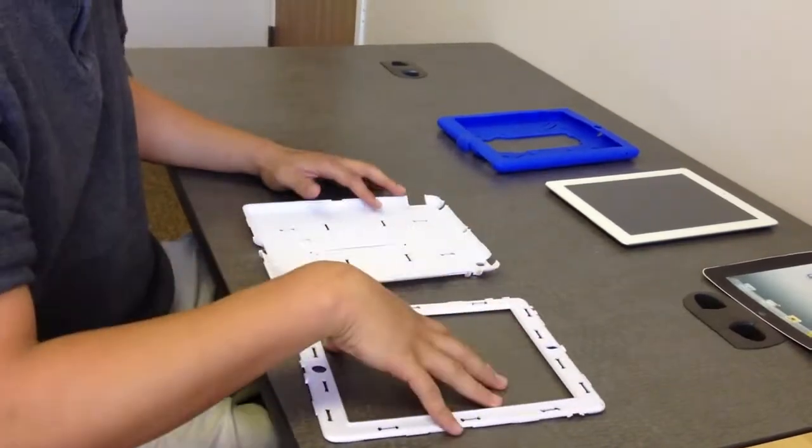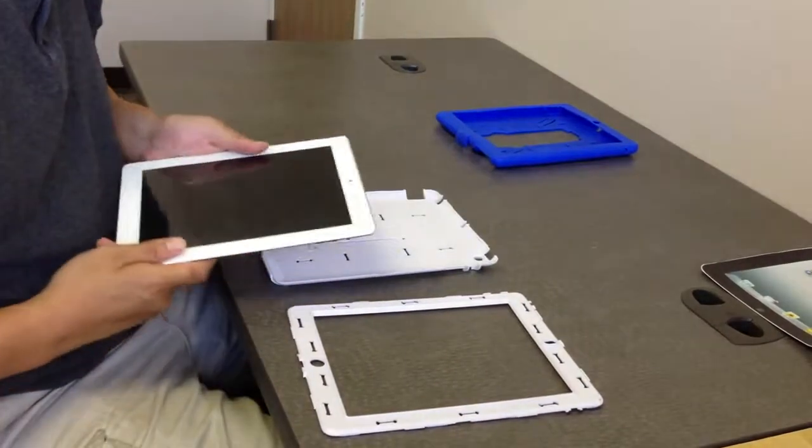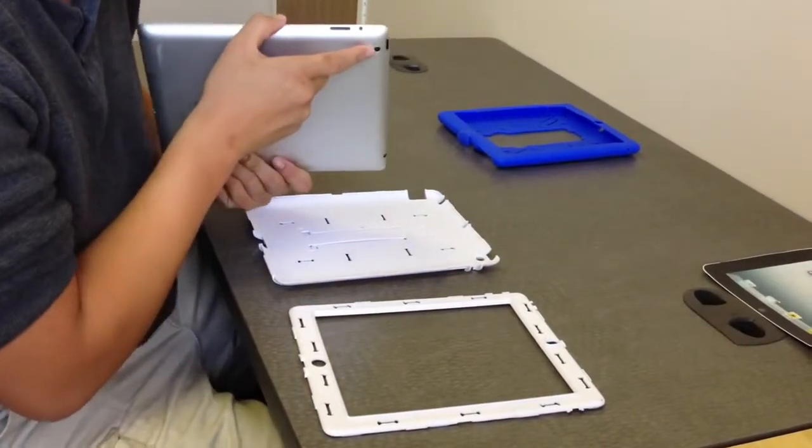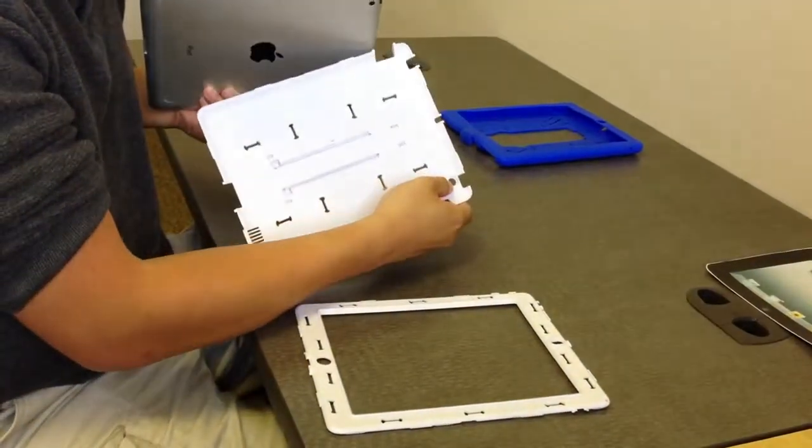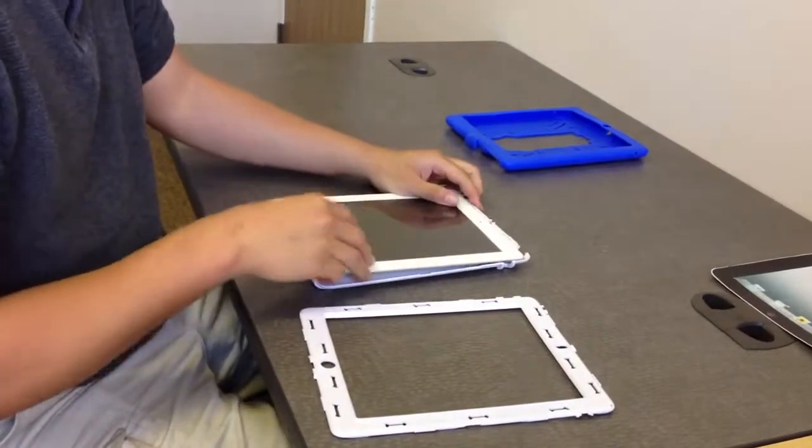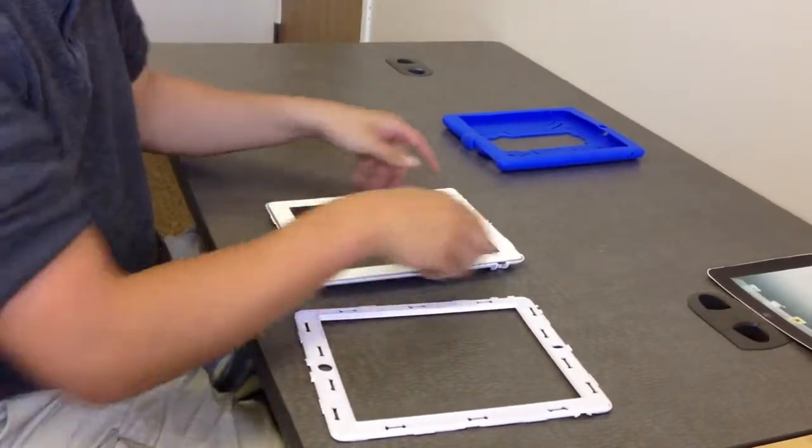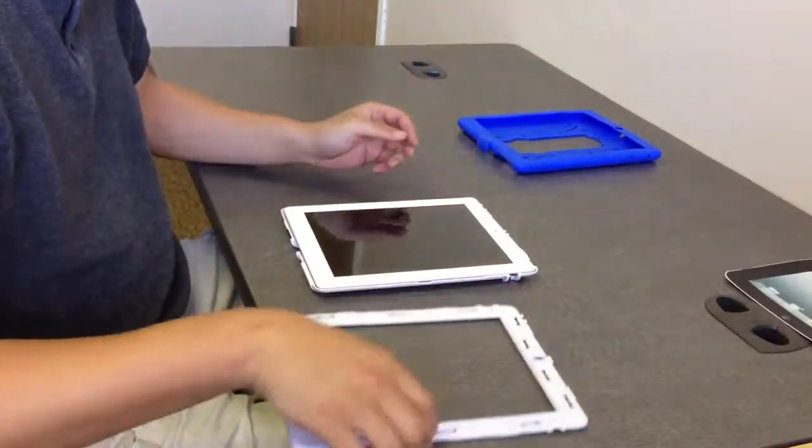This is the back piece and this is the front piece. Now we're going to insert the iPad into the case. As you can see, I'm going to match up the back camera with the back camera slot right there. Once that's in, all the ports should match up as long as the camera is matched up. That piece is in.